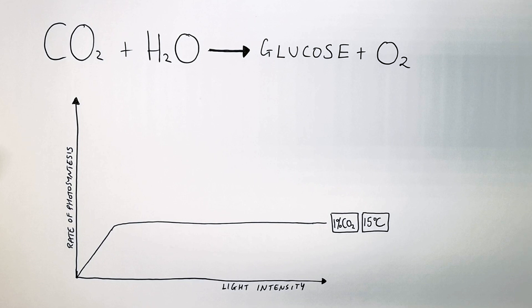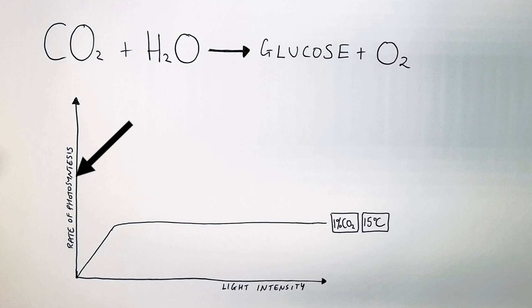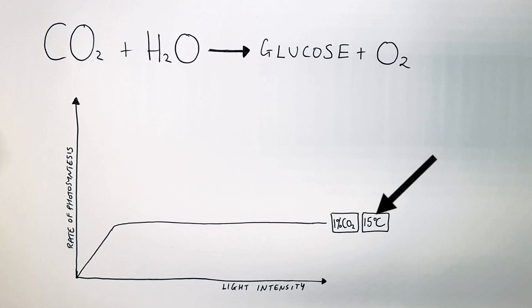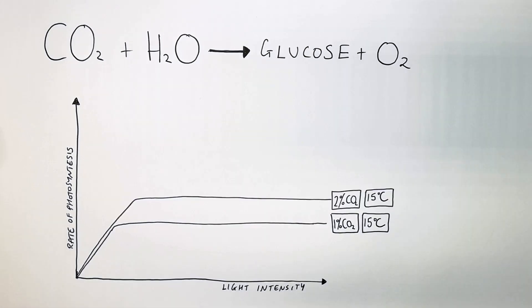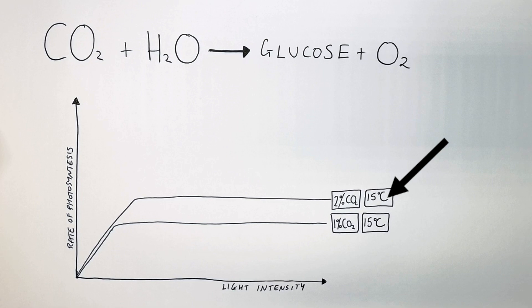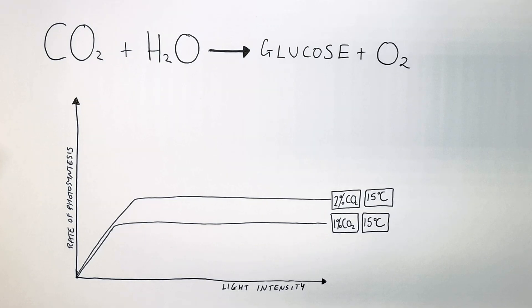This graph shows the effect of light intensity on the rate of photosynthesis of a plant growing in 1% CO2 and at 15 degrees Celsius. This line shows the effect of light intensity on the rate of photosynthesis of another plant. However, the temperature stayed the same but the concentration of CO2 increased to 2%, and that increase in CO2 caused the rate of photosynthesis to increase.